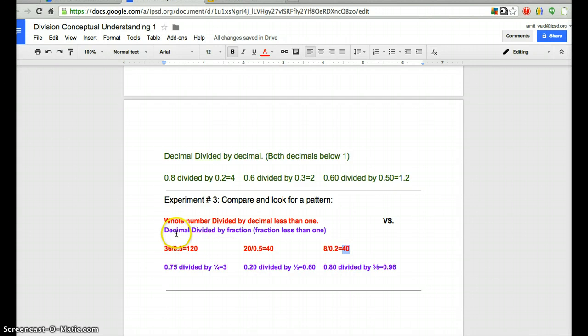Look what happens when I take a decimal, like 75 hundredths, and I divide it by a fraction. In this case, I did 75 hundredths divided by 1 fourth, and I received 3. Then I did 20 hundredths divided by 1 third, and I got 60 hundredths. And I started with 80 hundredths, then I split that by 5 sixths, and I got 96 hundredths.